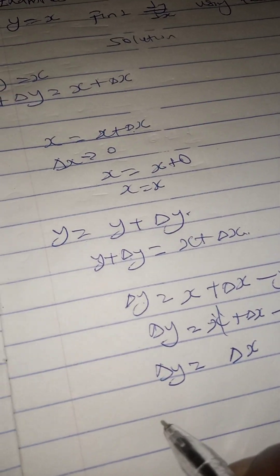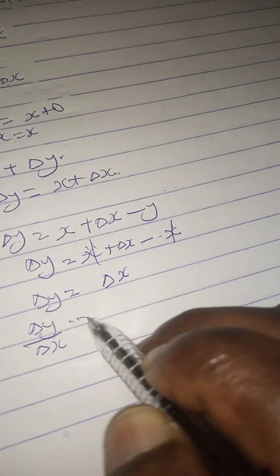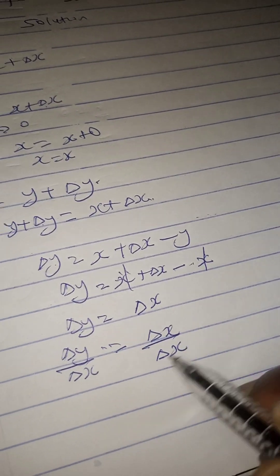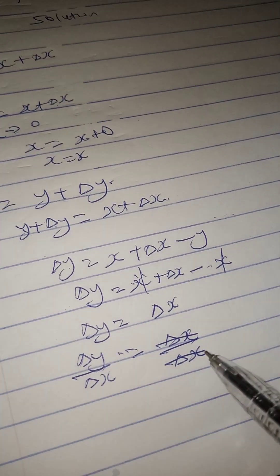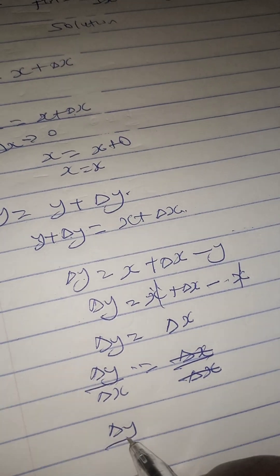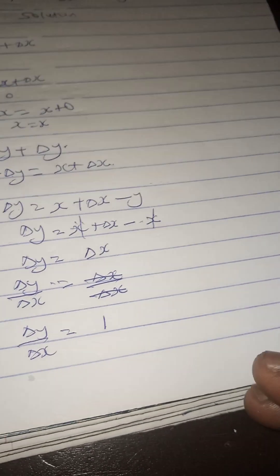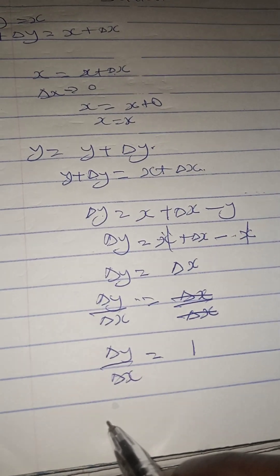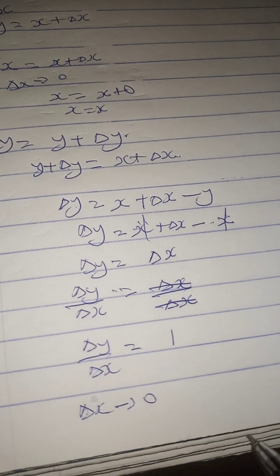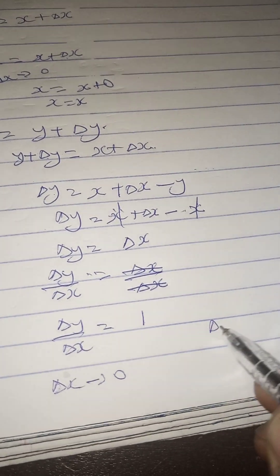We then divide through by δx: δy divided by δx equals δx divided by δx. The δx on the right cancels, leaving δy over δx equals 1. We then take the limit as δx approaches zero.